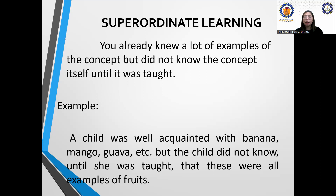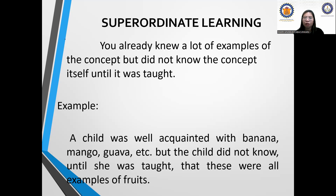The child at home always had fruits on the table and was conditioned to eat from the table every time. But the child didn't really pay attention to what they were. When the mother or caregiver said, 'You know what? These are all kinds of fruits,' that's superordinate learning. Now the child knows that all the ideas being mentioned relate to a single category — that everything on the table is fruit.